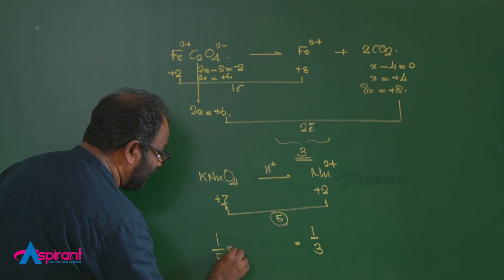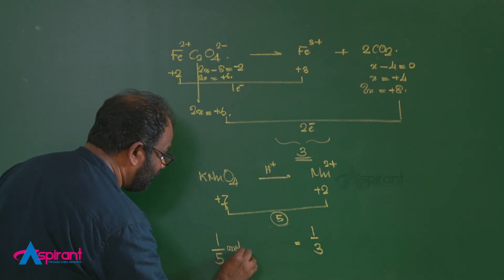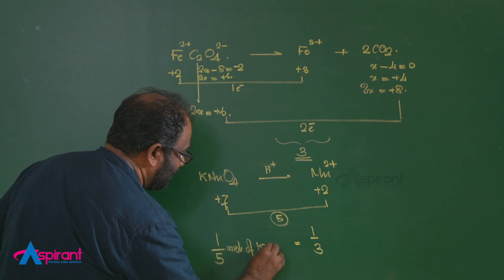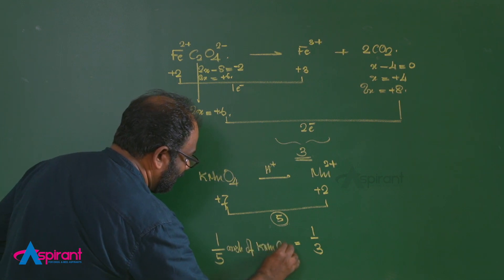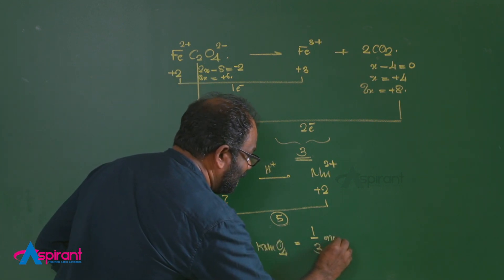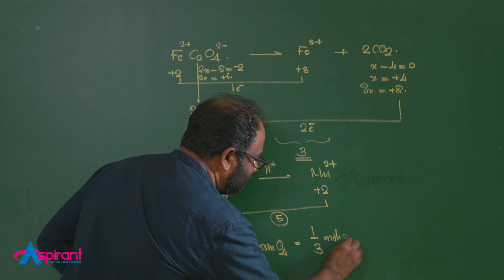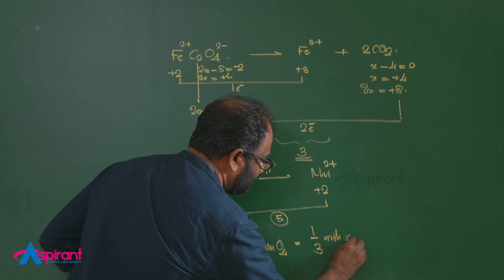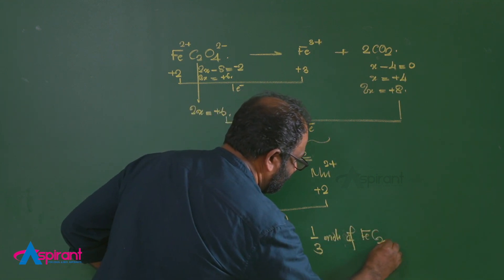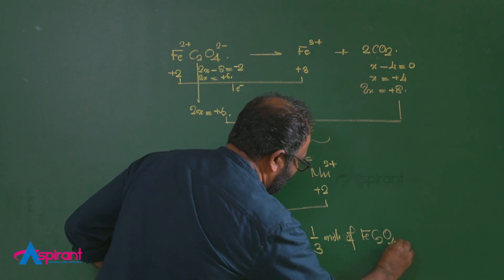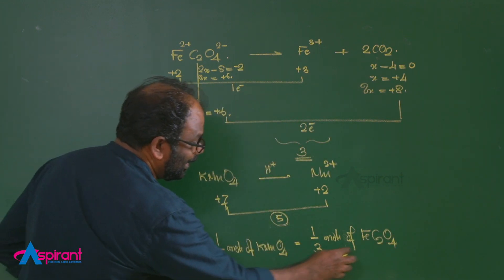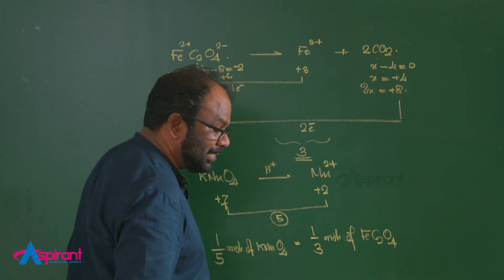Therefore, 1/5 mole of KMnO₄ can oxidize 1/3 mole of ferrous oxalate. This means 1 mole of KMnO₄ can oxidize a corresponding number of moles of ferrous oxalate by scaling this ratio.